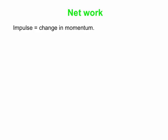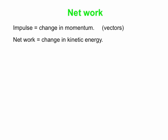Let's go over net work a little bit. Remember, impulse is change in momentum — an equation that connects vectors. Net work is the change in kinetic energy. Remember that momentum is made up of m and v; kinetic energy is also made up of m and v — it's half mv squared, in fact. But momentum is a vector, kinetic energy is a scalar, work is a scalar, and impulse is a vector.